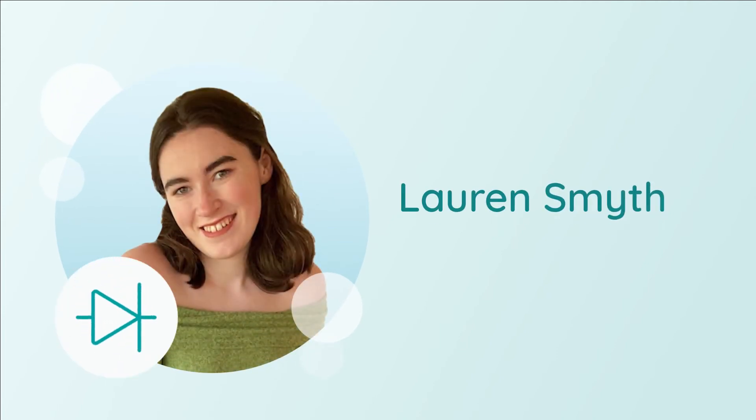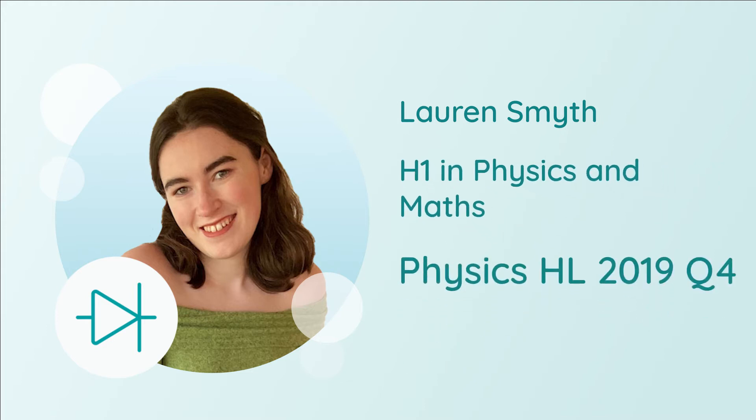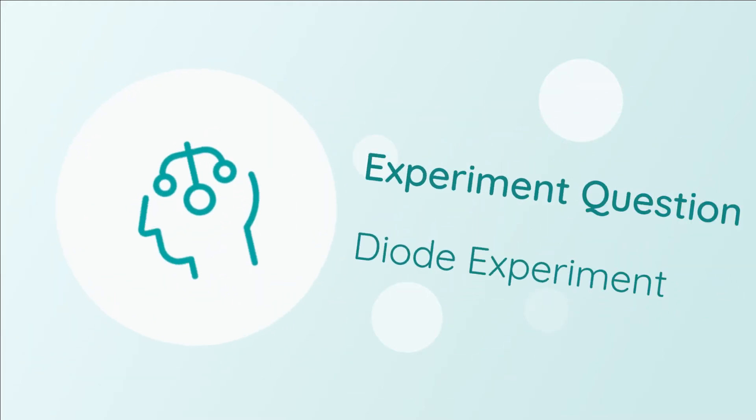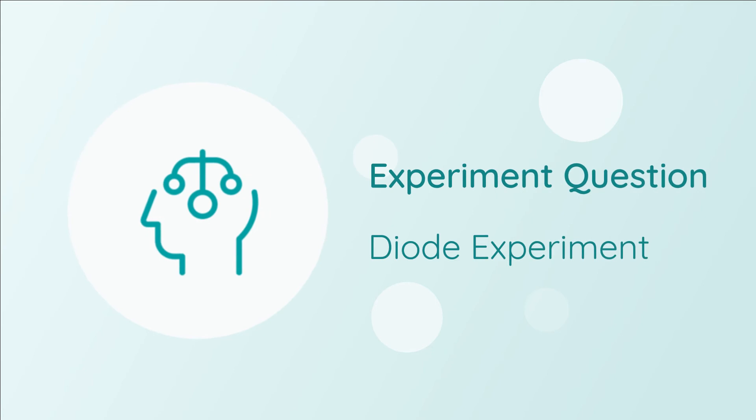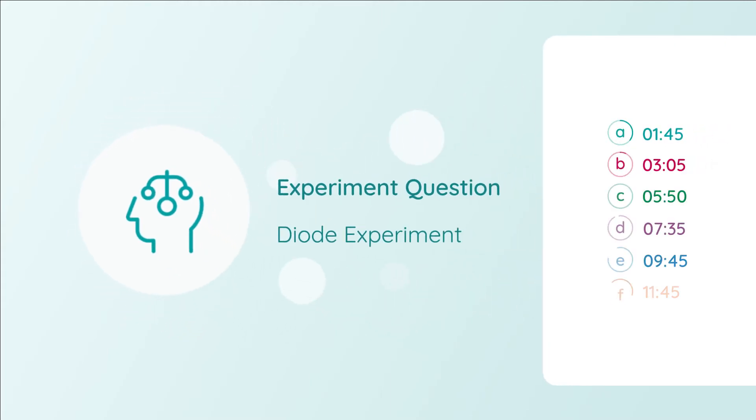Hi guys, Lauren Smith here. I got a H1 in physics and maths and I'll be walking you through 2019's higher level question 4. Today's experiment question is about investigating the variation of current with potential difference for a semiconductor diode, so let's get into it.